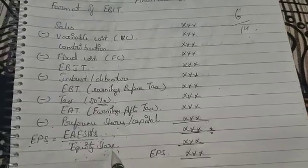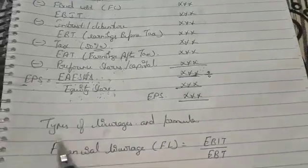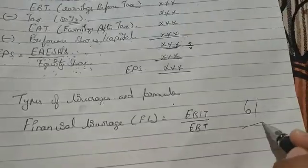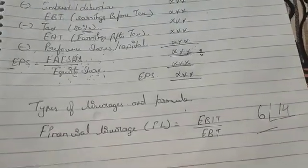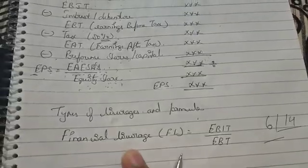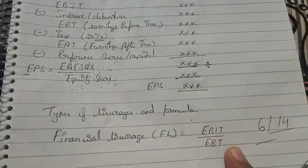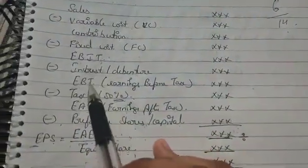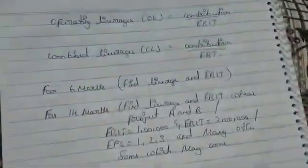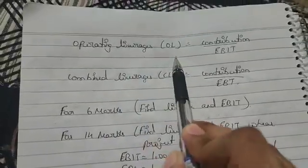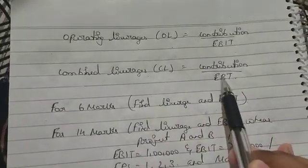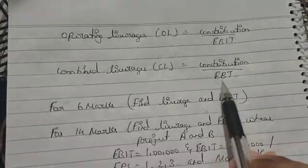Financial Leverage (FL) equals EBIT divided by EBT. Operating Leverage (OL) equals Contribution divided by EBIT. Combined Leverage (CL) equals Contribution divided by EBT - Earnings Before Tax. You can understand these formulas - take them down here.